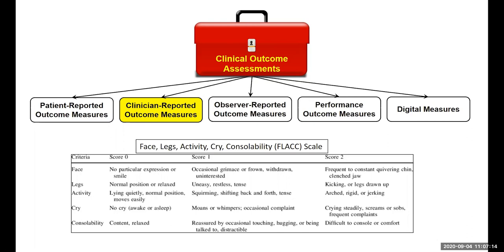For very young children and infants, we use what's called the FLACC scale — the Faces, Legs, Activity, Cry, Consolability scale. Within this scale, the clinician looks at different behaviors and pain expressions: the child's face, legs, activity, cry, and consolability. The clinician can score each criterion 0, 1, or 2 to represent different levels or severity of pain.